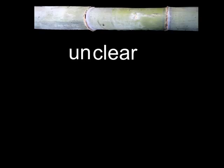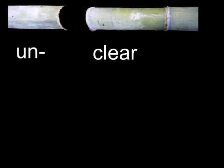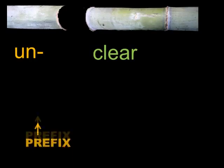At other times, something is added at the start of the word. Here, the word 'unclear' also has two morphemes. The main morpheme in the word is 'clear'. Then, the morpheme 'un' comes before the main part of the word, and so it is called a prefix.